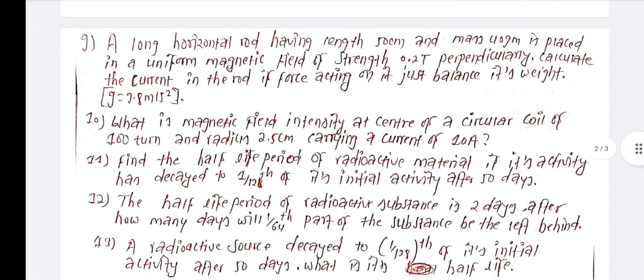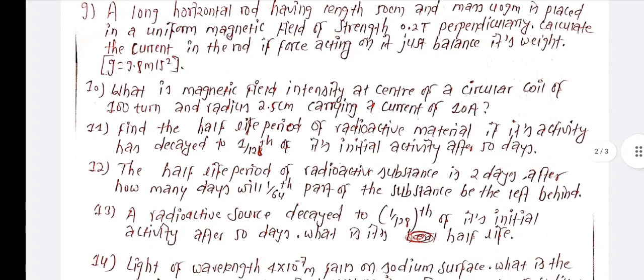What is the magnetic field at the center of a circular coil of one turn, radius 2.5 cm, carrying a current of 10 ampere?